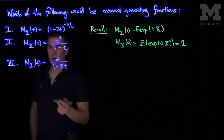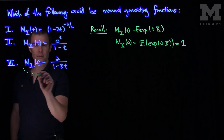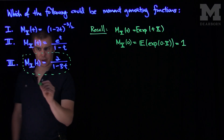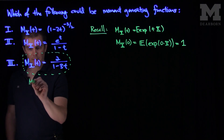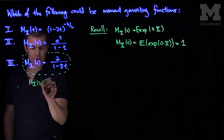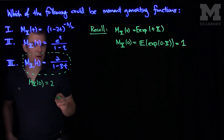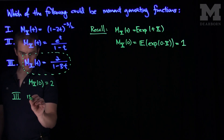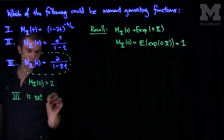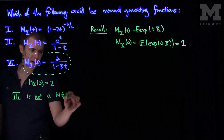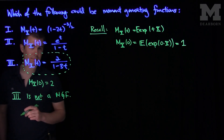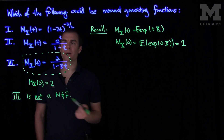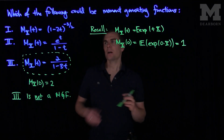If we look at the third function, m_x(0) for this function is equal to 2. Therefore, this implies that function 3 is not a moment generating function. If we plug in 0 to either function 1 or 2, we get 1, so those are still possible.